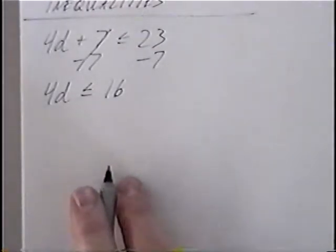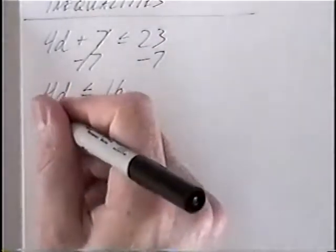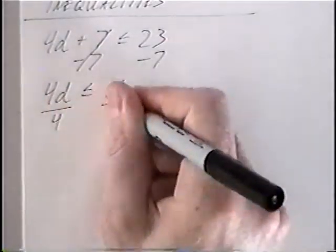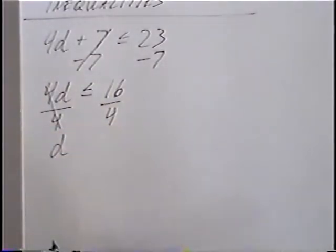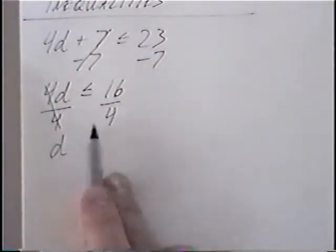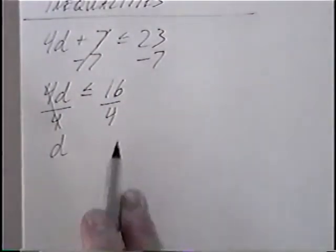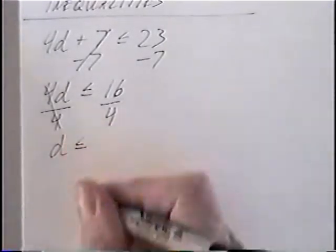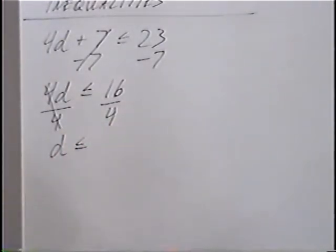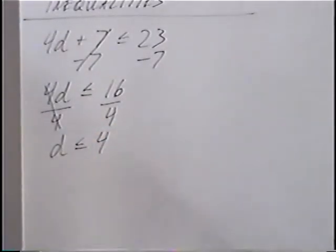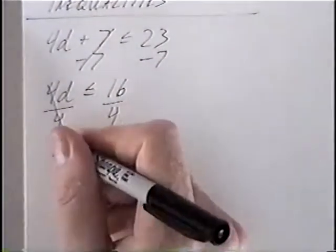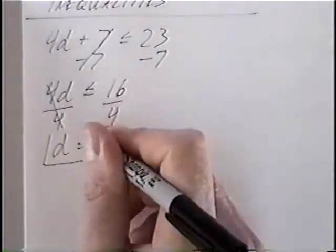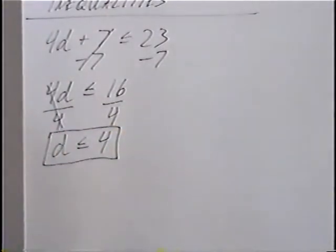The second step to solve: we have 4 times d, so to get rid of the 4 we can divide by 4. The 4 would cancel. The inequality again does not switch if we divide by a positive number — it only switches if you divide by a negative number. 16 divided by 4 would be 4. Since the instructions are just to solve, we do not have to graph this inequality. So the answer is d is less than or equal to 4.